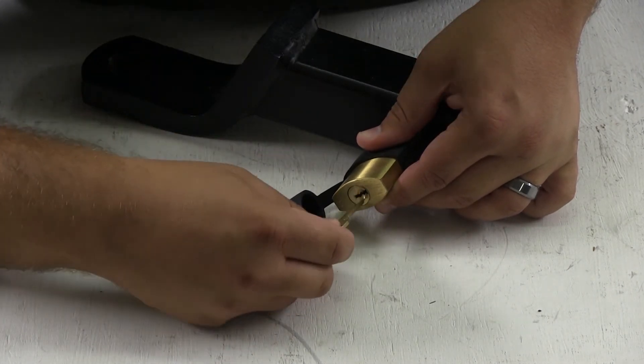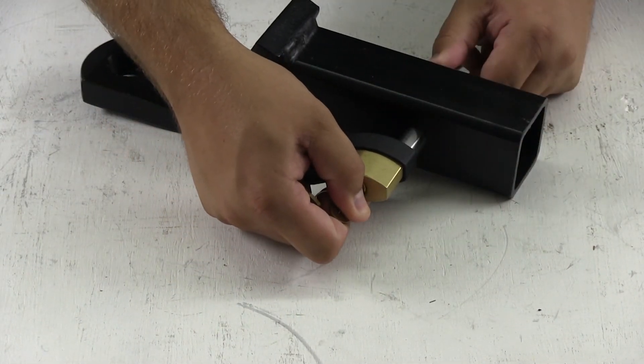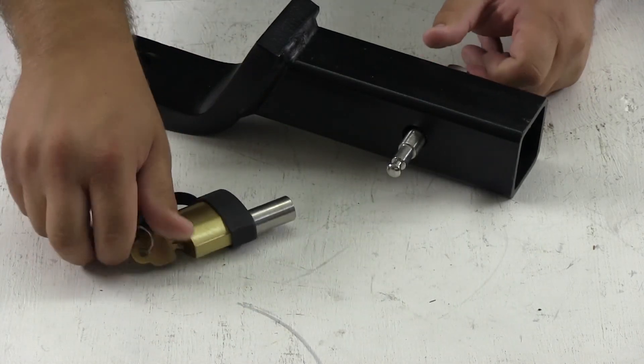To remove the lock, insert the key, give it less than a quarter of a turn, and the lock comes off.